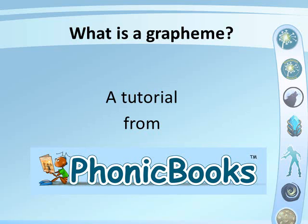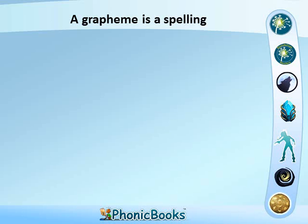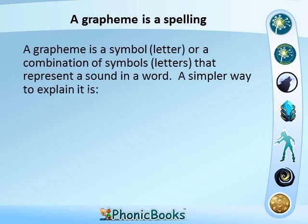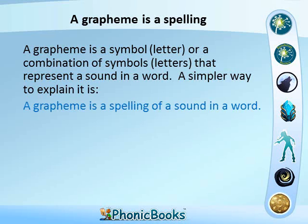What is a grapheme? This is a tutorial from Phonic Books. A grapheme is a spelling — a symbol or a combination of symbols that represent a sound in a word. A simpler way to explain it is: a grapheme is a spelling of a sound in a word.